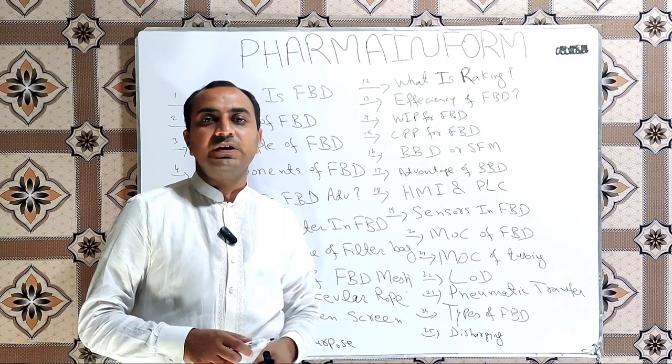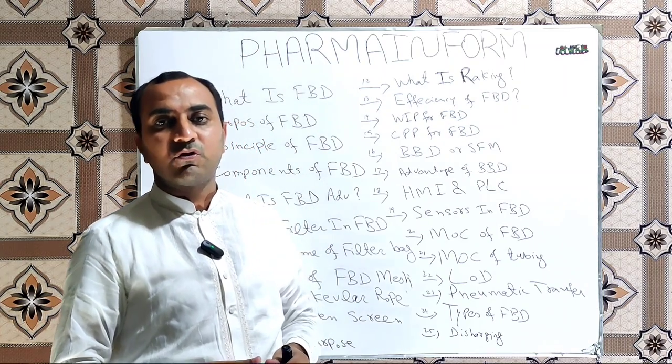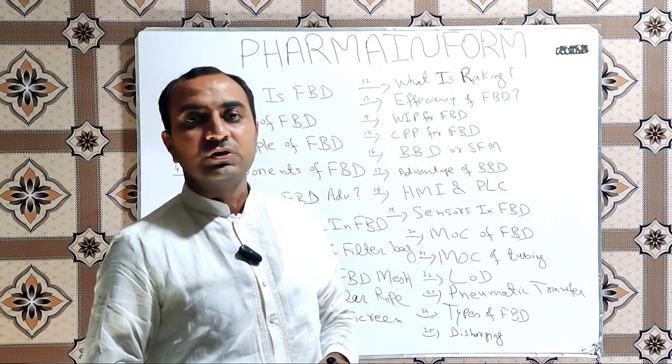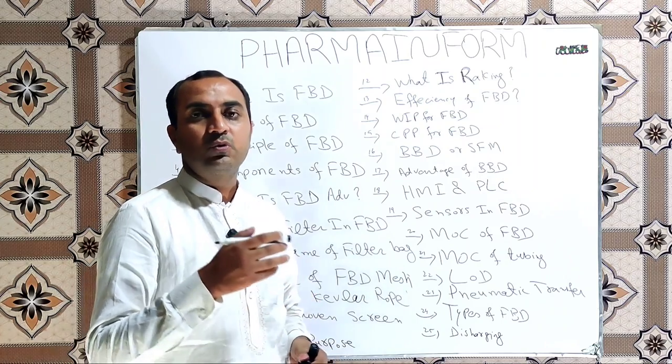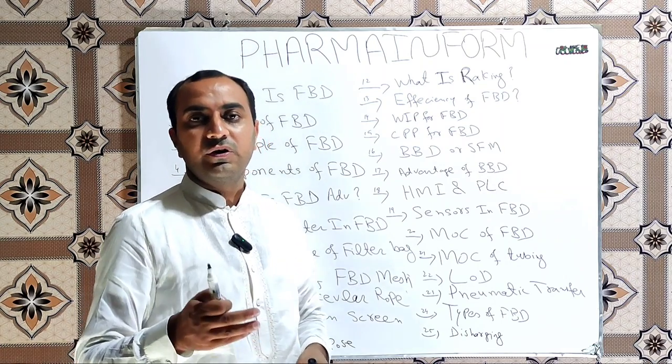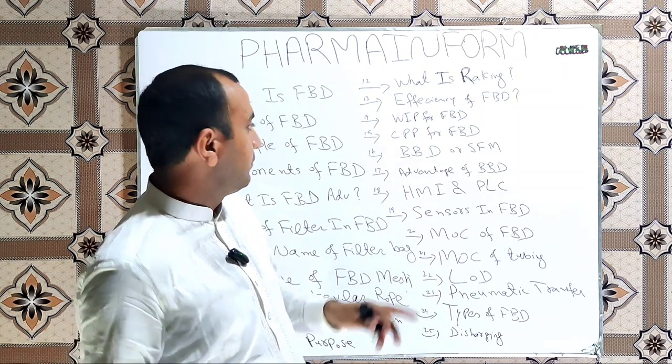What is the efficiency of FBD? As we discussed earlier, efficiency of FBD is very high. It usually takes 1 to 2 hours to dry almost 200 to 300 kg of the product.